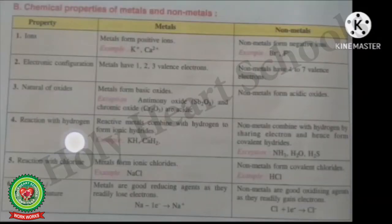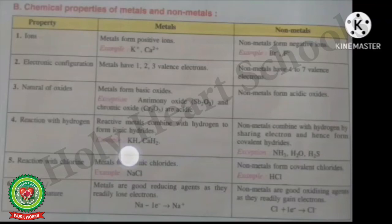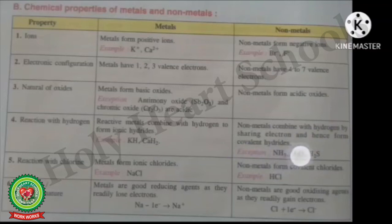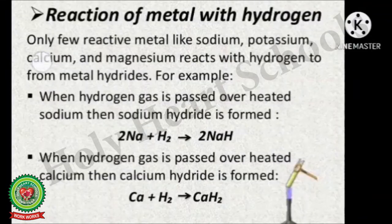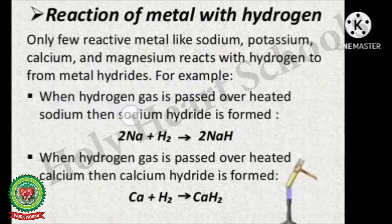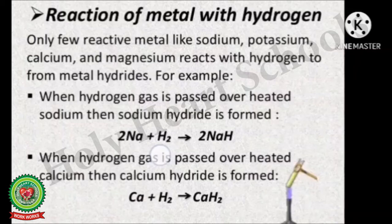The next chemical property is reaction with hydrogen. Reactive metals combine with hydrogen to form ionic hydrides. For example, potassium hydride and calcium hydride. Non-metals combine with hydrogen by sharing electrons and hence form covalent hydrides — examples are ammonia, water, and hydrogen sulfide. Only a few reactive metals like sodium, potassium, calcium, and magnesium react with hydrogen to form metal hydrides. For example, when hydrogen gas is passed over heated sodium, sodium hydride (NaH) is formed. Similarly, when hydrogen gas is passed over heated calcium, calcium hydride (CaH2) is formed.